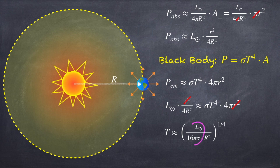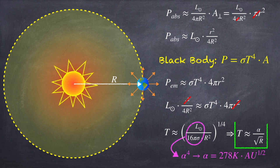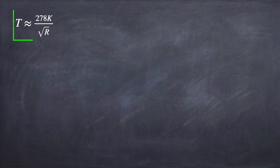I'm now going to take this quantity here, which I'm circling in pink, and call it alpha to the fourth. This is just a constant, a number. If you plug in the values, you'll find that it's about 278 Kelvin AUs to the one-half. An AU is an astronomical unit, which is defined as the average distance between the Earth and the Sun. So now we can rewrite our expression for the temperature as alpha divided by the square root of capital R. Now, there's nothing special about the Earth, and so capital R could just be the distance between any planet and the Sun, as long as it's measured in AUs.